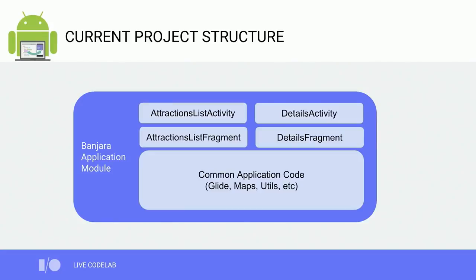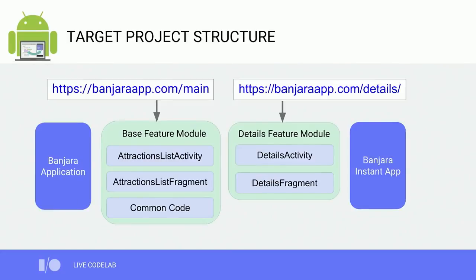Today, we'll work on making Banjara Instant. The first thing to consider is what are the URL entry points into Banjara that make sense. We have two entry points — one the list and one the details — and we want to make both of them discoverable. So we'd add two URL entry points: one for the attractions list and one for the details. We'll then refactor the existing application code into two feature modules.